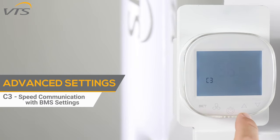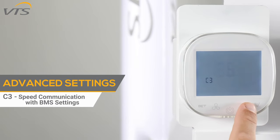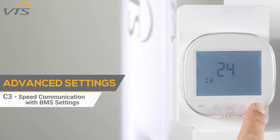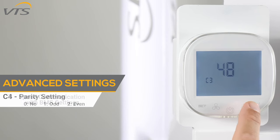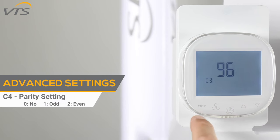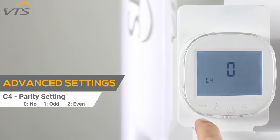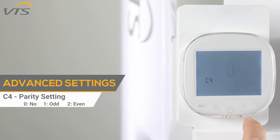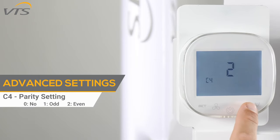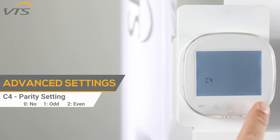The C3 function gives you the ability to change the speed setting for the controller to work with a BMS system. The C4 function allows you to change the parity setting between the controller and BMS system: zero is no parity, one makes it odd, and two makes it even.